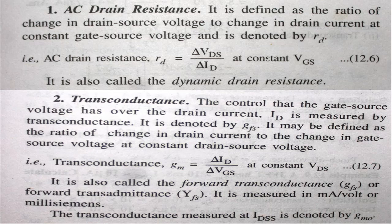Transconductance is defined at constant drain-source voltage, denoted by symbol gm. gm = ΔI_D / ΔV_GS at constant VDS. It is also called forward transconductance and forward transadmittance, denoted by gfs and yfs respectively.